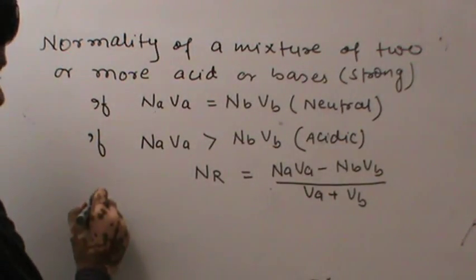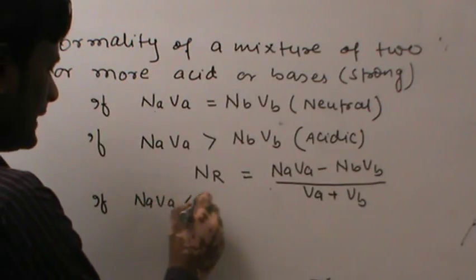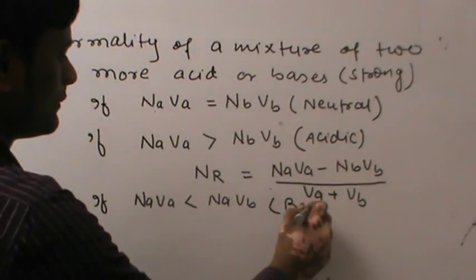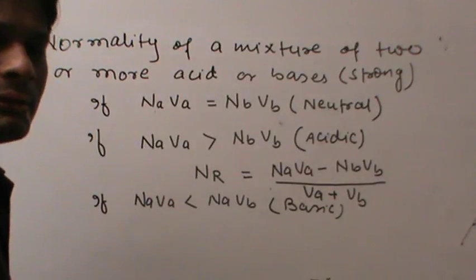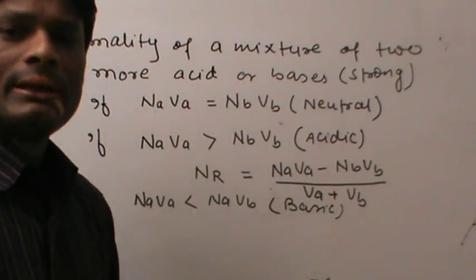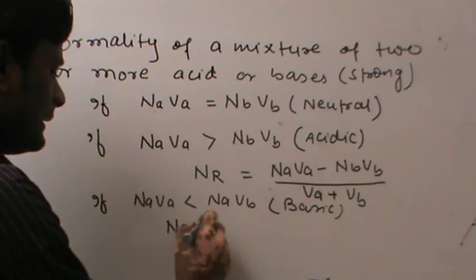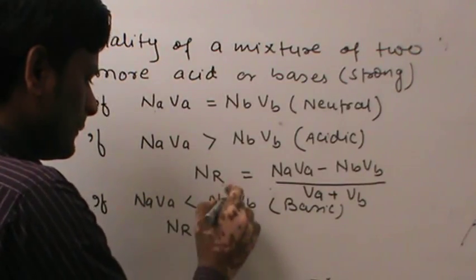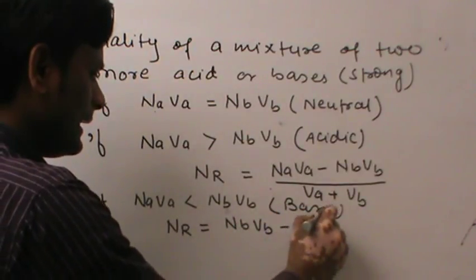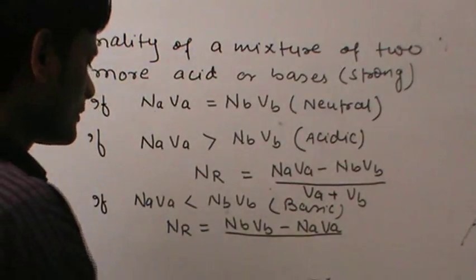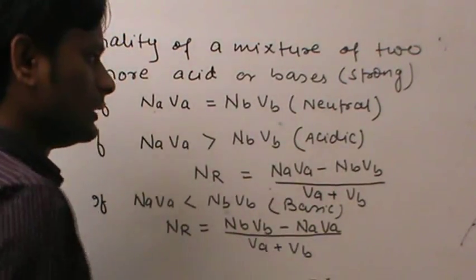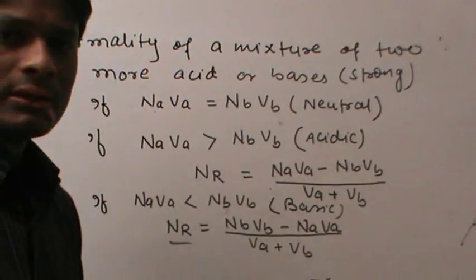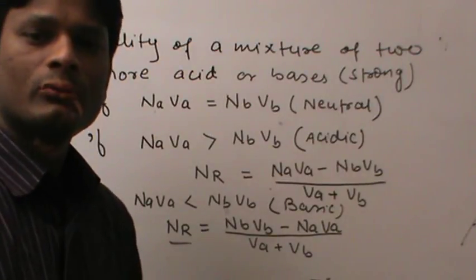If NA·VA is less than NB·VB, the solution will be basic and the resultant normality NR equals (NB·VB minus NA·VA) divided by (VA plus VB). These relations give the resultant normality of the mixture and tell us whether the solution is acidic, basic, or neutral.